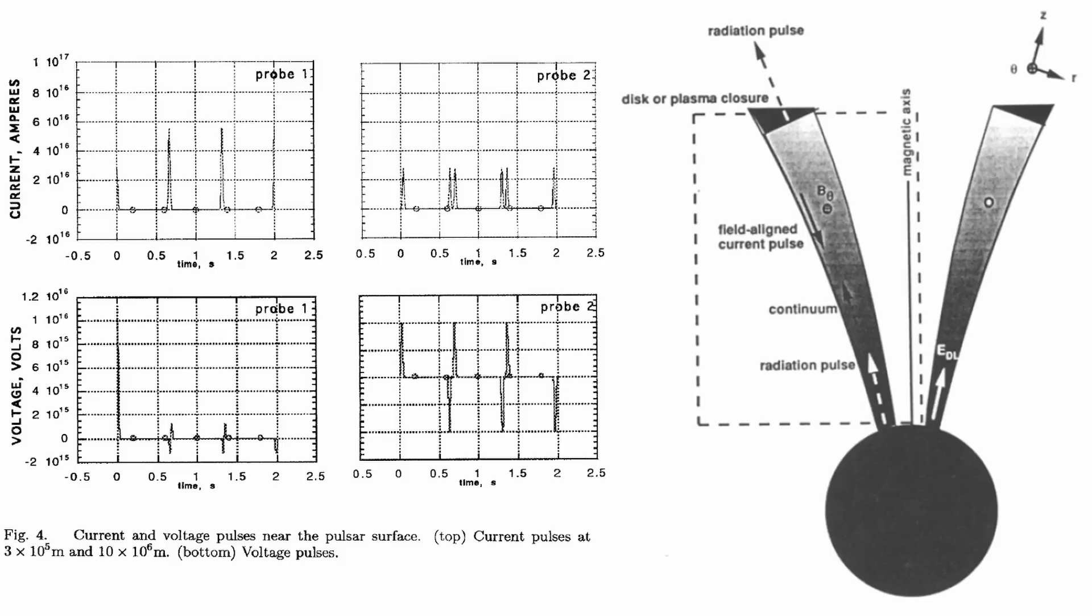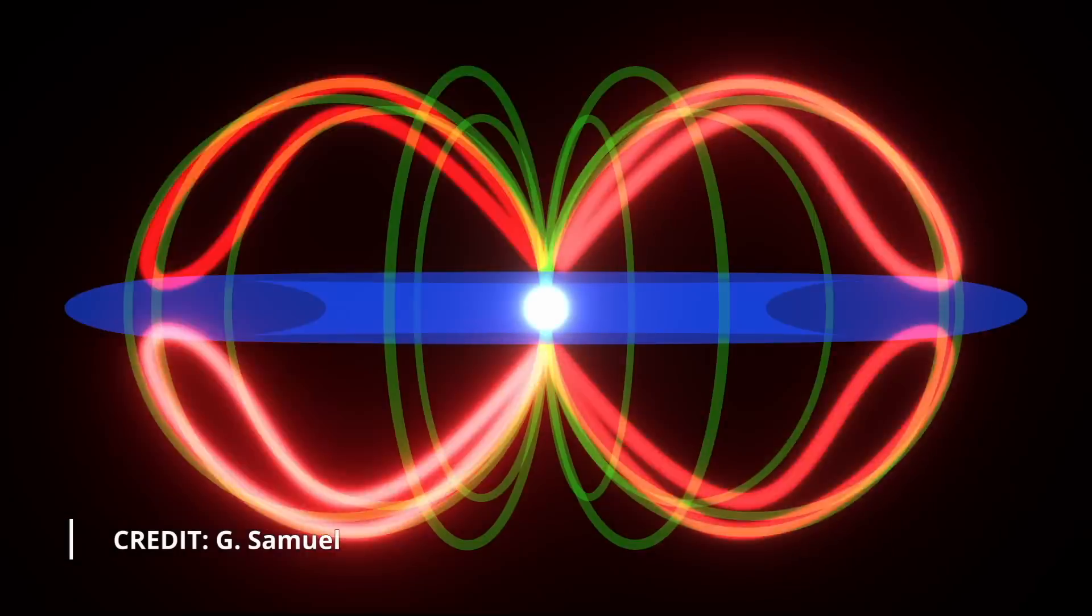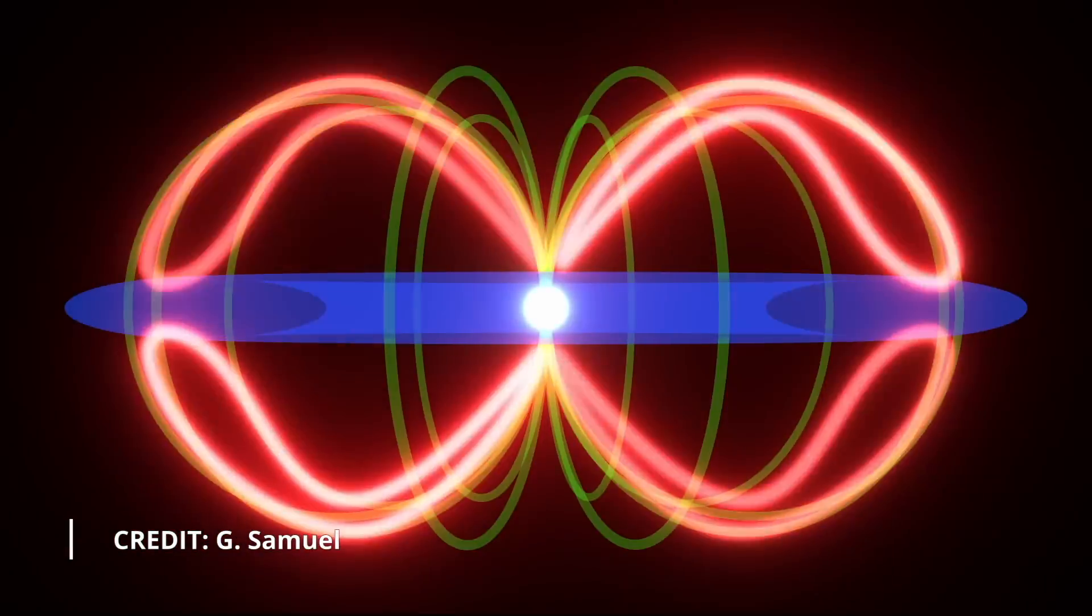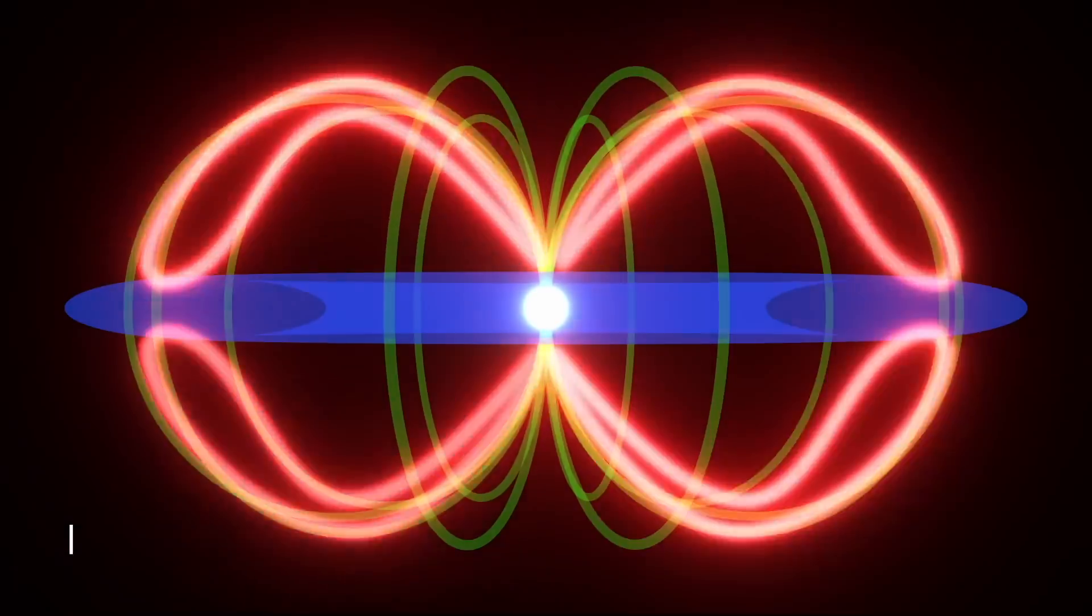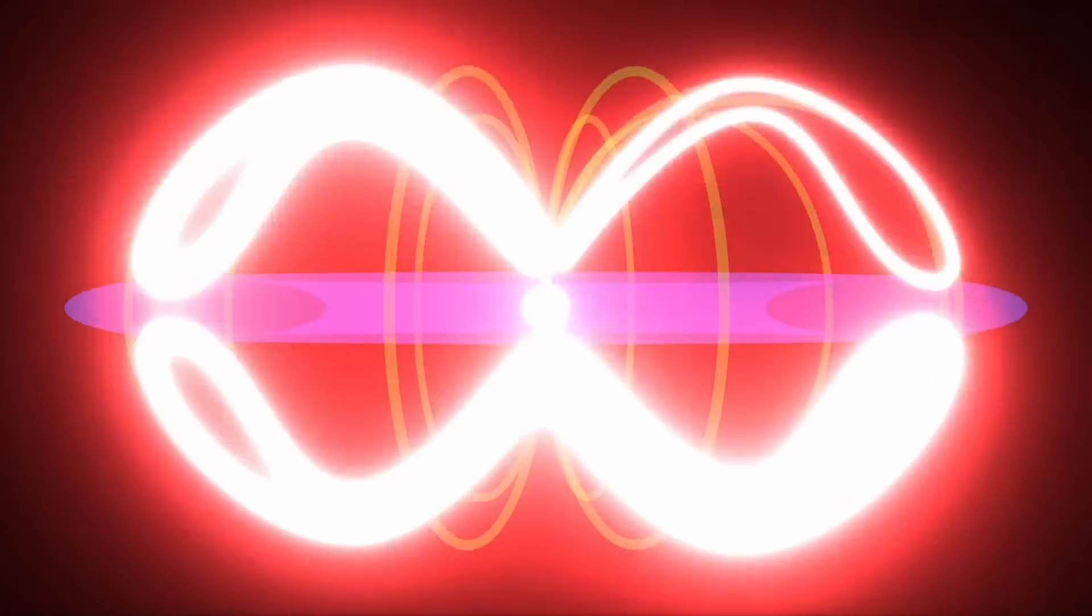Whether the radiated pulse has a single or double pulse profile will depend on the extent of the radiation region at the pulsar surface. If the radiating current is confined to a shallow region instead of an extended region, a single pulse profile will replace the double profile. This effect is actually frequency dependent. Lower frequencies are associated with fields that are extended in the emission region and are more likely to show pulse structure.